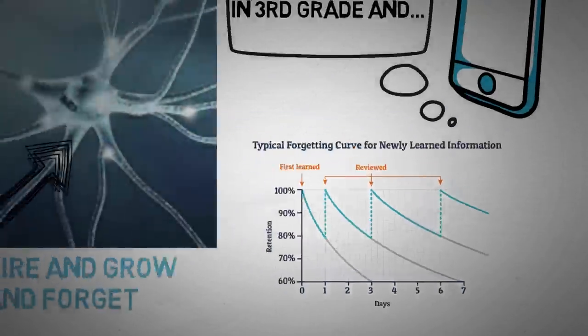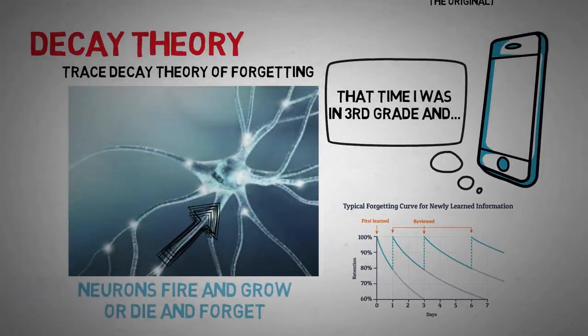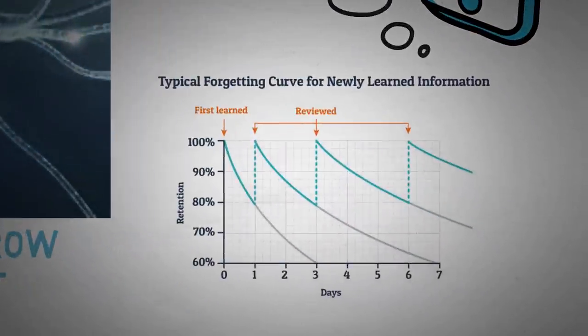However, the more that we use it, the more it would make sense to try to remember it. In fact, relearning is the first way we can remember things better. As you see in this graph, each time we try to relearn something, the rate at which we forget is less and less. This is why studying for a test works so well. You're basically just relearning the information. In short, this theory of forgetting is called the decay theory.